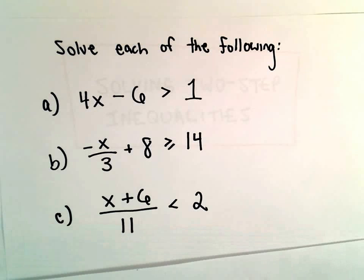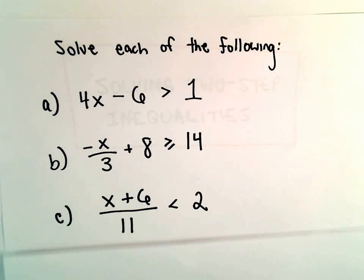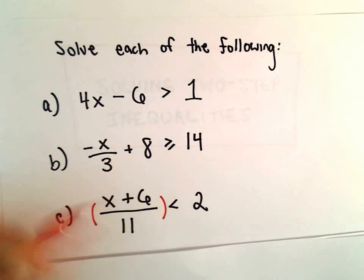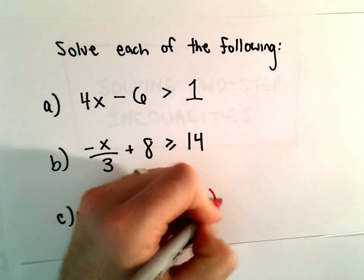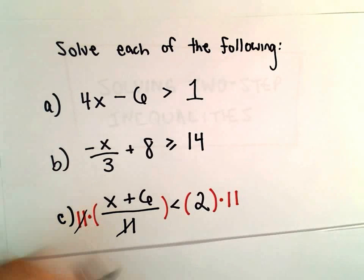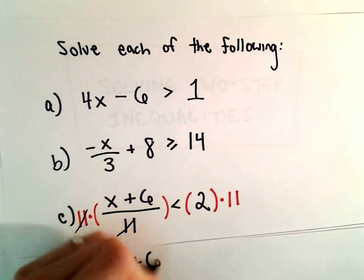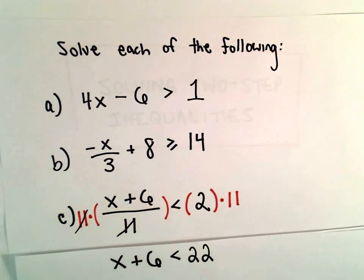Might as well finish them off here. We have x plus 6 divided by 11 less than 2. The first thing I'm going to do, since we're dividing the left side by 11, is multiply both sides by 11. On the left side, the 11s would cancel, leaving us with x plus 6, and that's going to be less than 2 times 11, which is 22.